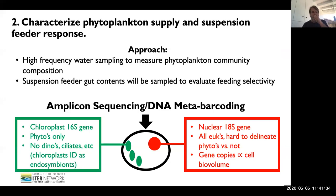On smaller reef scales, we plan to characterize the phytoplankton supply and the response of suspension feeders to that supply. The approach is a campaign of high frequency, basically daily, water sampling to measure the phytoplankton community composition and how it's changing. At the same time, we'll sample suspension feeder gut contents to evaluate feeding selectivity — what species of phytoplankton they're depending on compared to what's available in the water column. The challenge is that it's difficult to count phytoplankton even in the water, much less in guts. We'll be doing some microscopy, but we'll also be relying heavily on DNA metabarcoding to identify the communities of phytoplankton in the guts and in the water column.